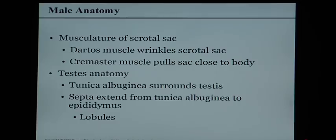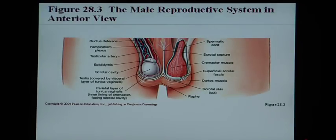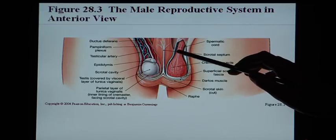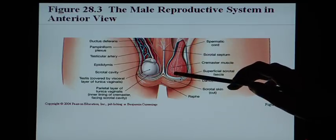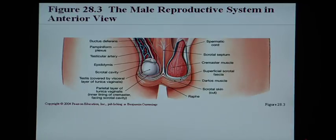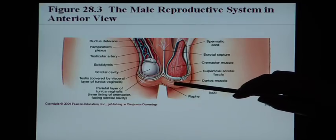The testicles are surrounded by a special membrane called the tunica albuginea — a fibrous membrane that surrounds the testicle and divides it into lobules separated by septa. Looking at the musculature of the scrotal sac, we can see the cremaster muscle surrounding the testicle, and right under the skin is the dartos muscle — the one that wrinkles the scrotal sac when the skin is not in use.